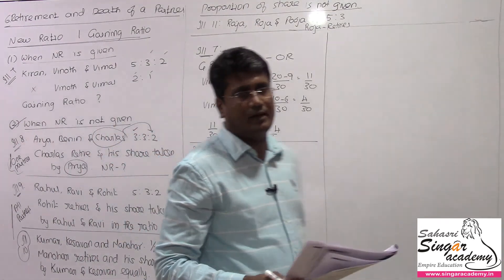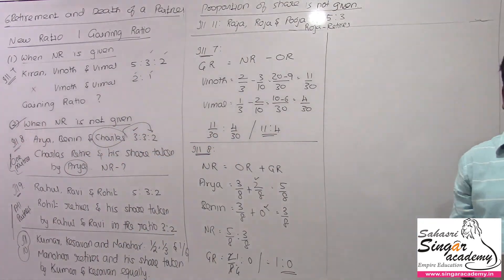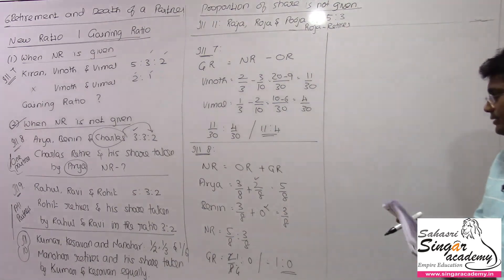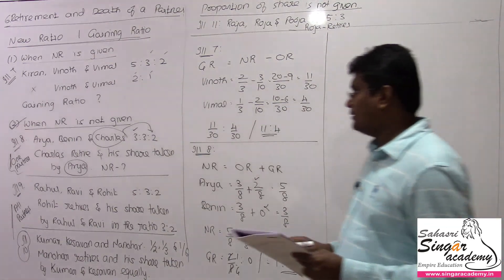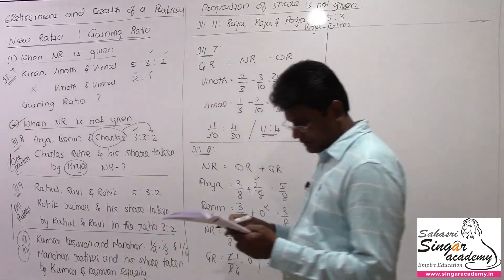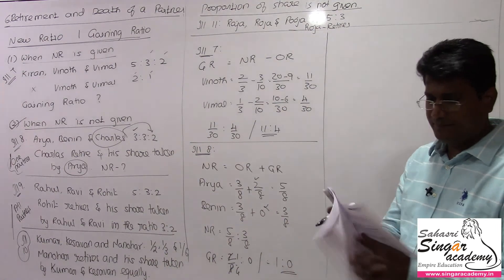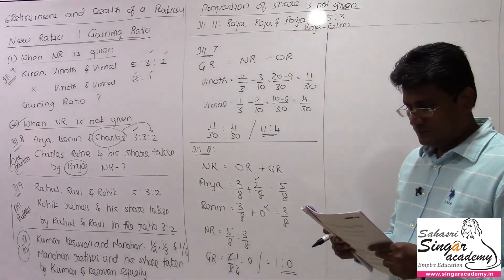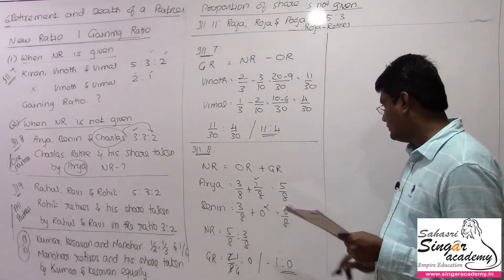Only Arya gains because of the retirement of Charles. The other partner doesn't gain. Charles retires, so only Arya benefits. The new ratio is 5 to 3, and gaining ratio is 1 is to 0.